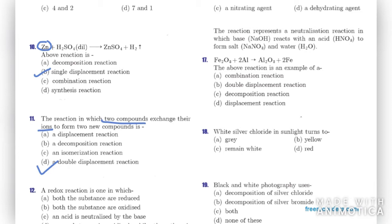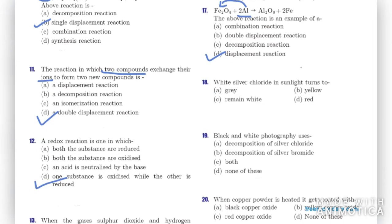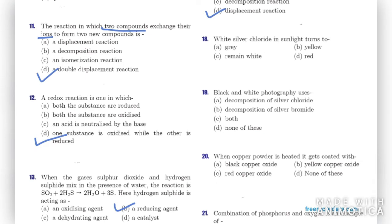Question seventeen: given a reaction, we need to identify its type. We can see Al being replaced by Fe, so it is a displacement reaction — not a double displacement but a single displacement reaction, because we have a single element being displaced.